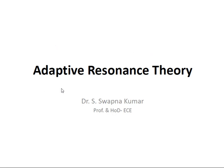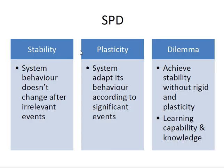Soft computing is a collection of fuzzy logic, neural network, genetic algorithm, artificial intelligence, and so on. Let's see what role ART plays in soft computing. To understand ART systems, it is very important to understand the concept of SPD.